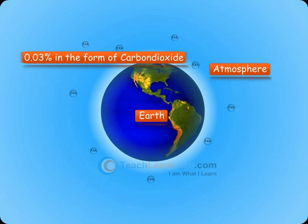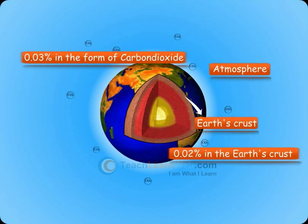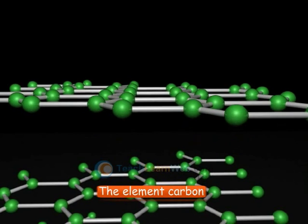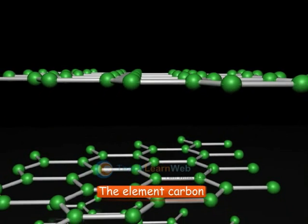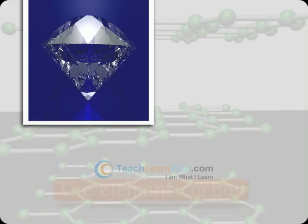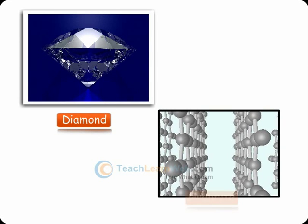And 0.02% in the Earth's crust. Allotropes of carbon: the element carbon mainly occurs in two forms called as its allotropes. Allotropes of carbon are diamond and graphite.